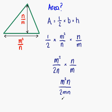Is this our final answer? No, because we can simplify. We have n multiplying on the top and n on the bottom, so these cancel. We also have m on the bottom and m squared on the top — m squared is just m times m — so the m on the bottom cancels with one of the m's from the top. That leaves us with m on the top and 2 on the bottom. So the area of the triangle is m over 2.